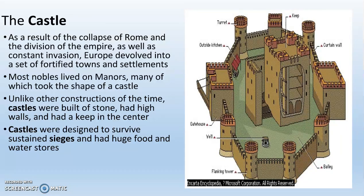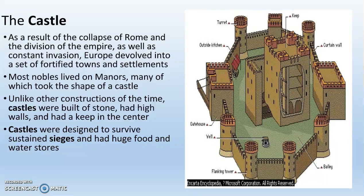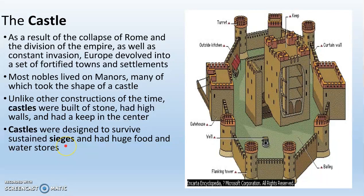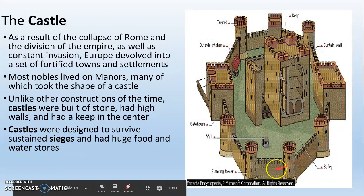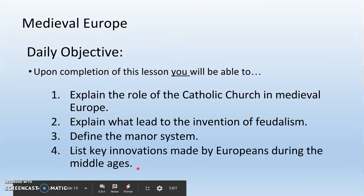The last innovation to discuss is the castle. Because of the constant invasions by Vikings, Magyars, and Muslims, the manor eventually started getting bigger and bigger and turned into castles. Unlike other constructions of the time, castles are built of stone with really high walls — the idea is to keep people out. The purpose of a castle is to sustain sieges: you hole up inside with lots of food and water, and you've got guys in the parapets and towers shooting arrows down to survive against invasions. You probably know what a castle is.